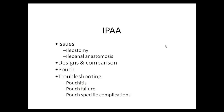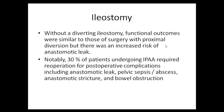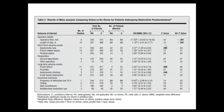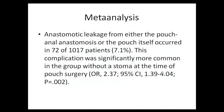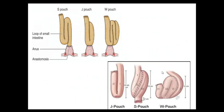Overall, quality of life is better in patients with end ileostomy rather than pouch surgery due to pouch-related complications. A diversion ileostomy after pouch anal anastomosis does not prevent leaks but does decrease complications associated with leaks. Studies and meta-analyses favor the use of diversion ileostomy as the standard, showing less length of hospital stay, lower anastomotic leak rate, lower pouch failure rate, and less anastomotic stricture.